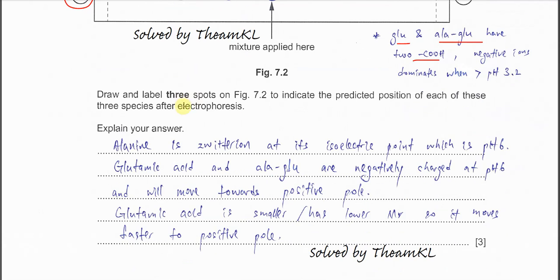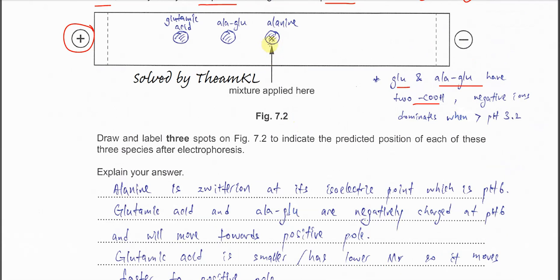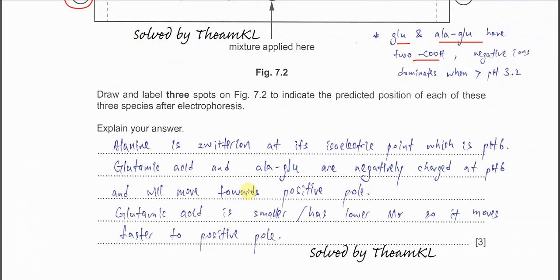So when drawing the electrophoresis result: alanine does not move and stays at the origin as a zwitterion — it has both positive and negative charges and is neutral overall. The dipeptide moves toward the positive pole but more slowly. Glutamic acid, being smaller and negatively charged, moves fastest toward the positive pole.